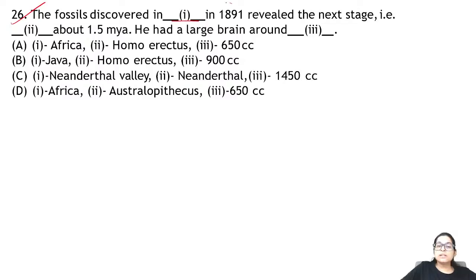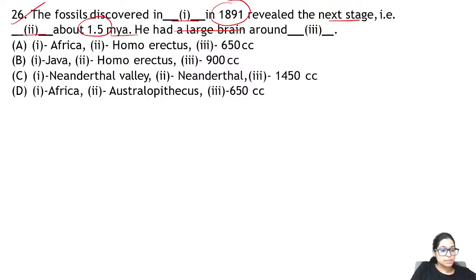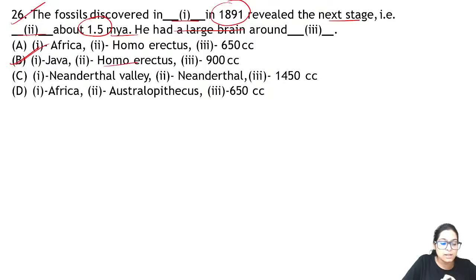Zoology Question 26: a fossil discovered in 1891 revealed the next stage — about 1.5 million years ago it had a large brain of around 900 cc. This is a NEET NCRT statement. The answer is B — Java Man, Homo erectus, 900 cc.